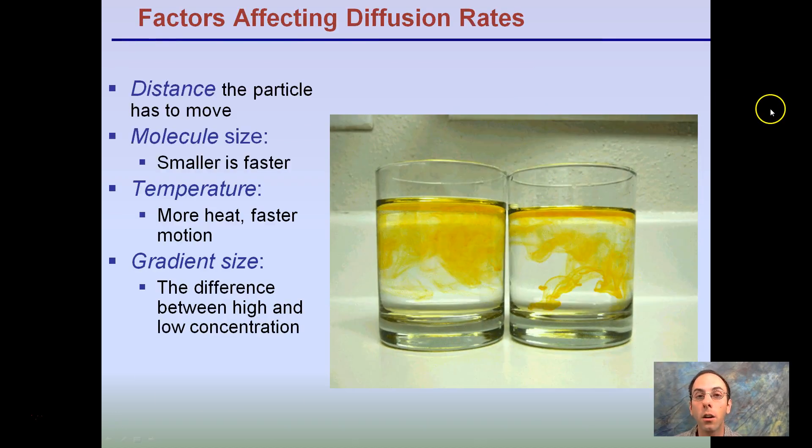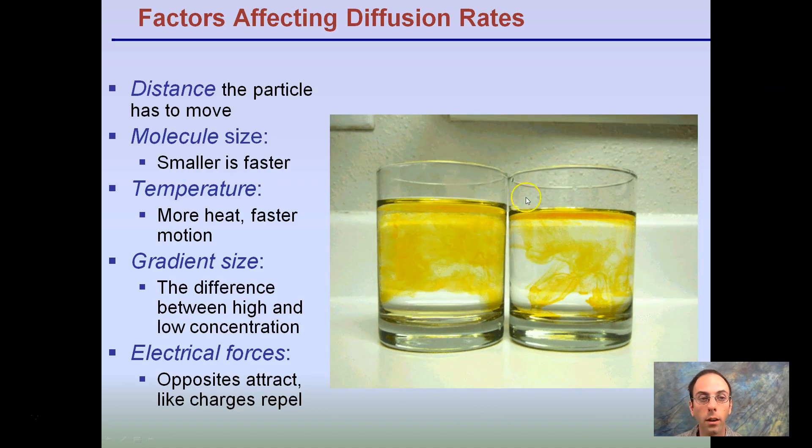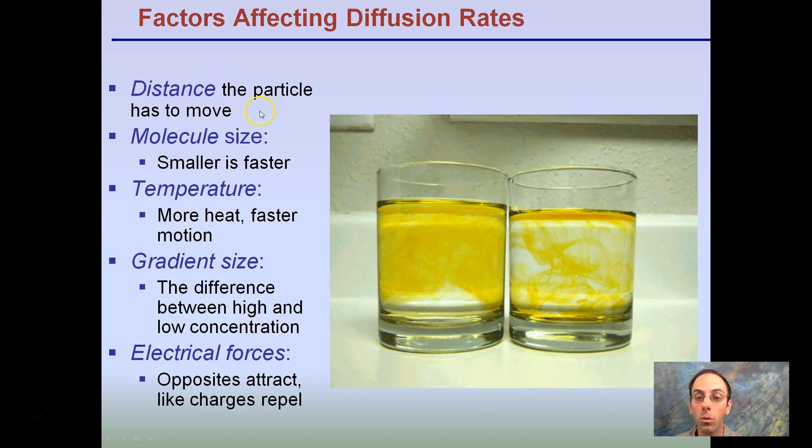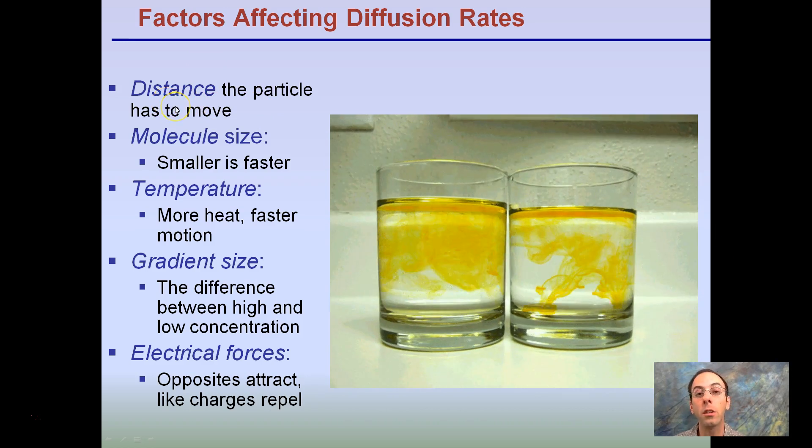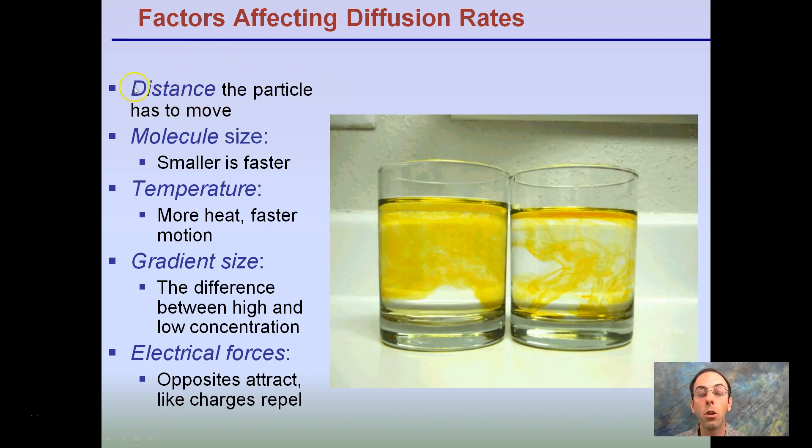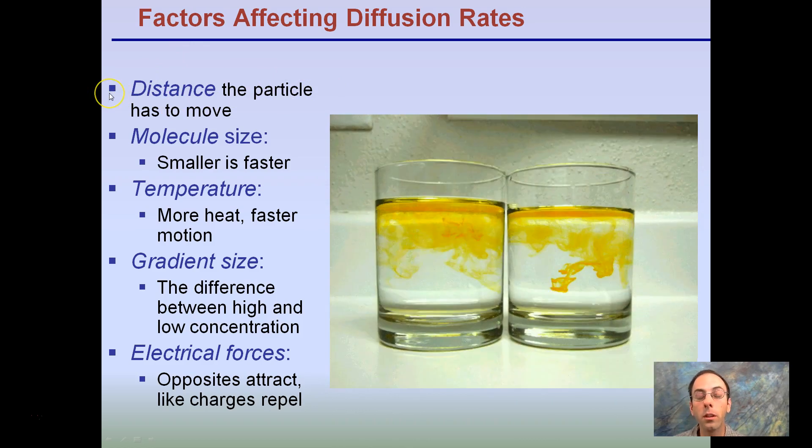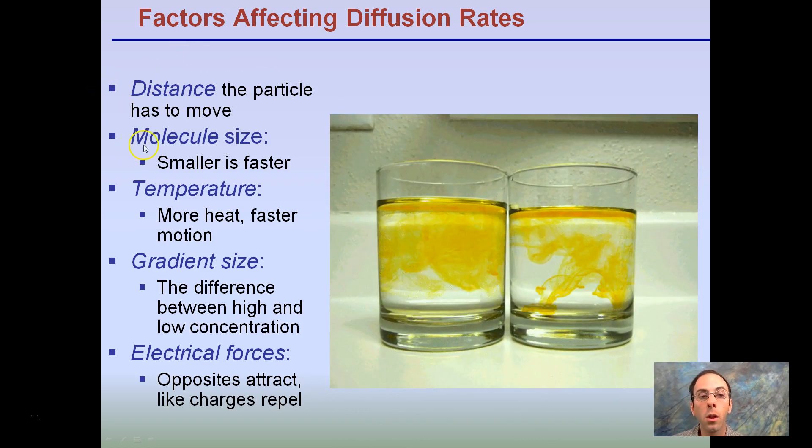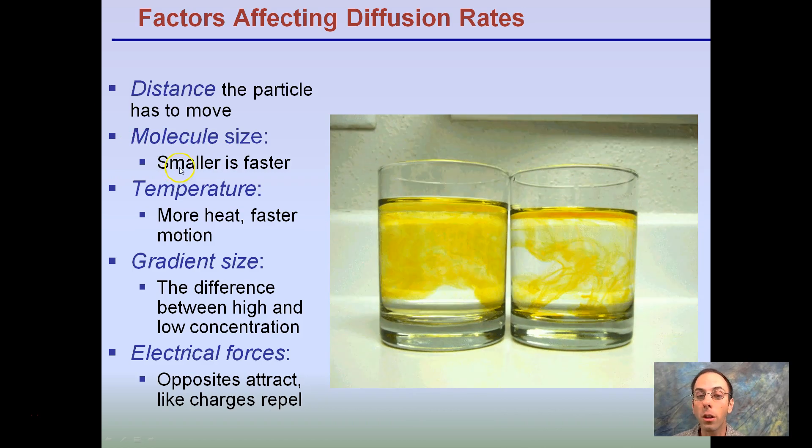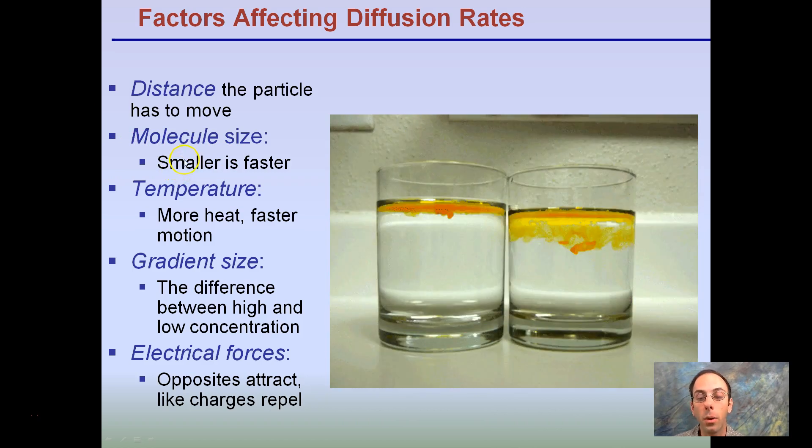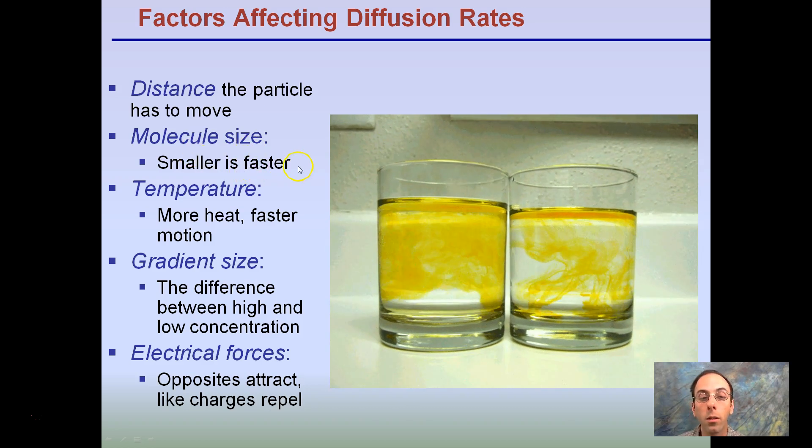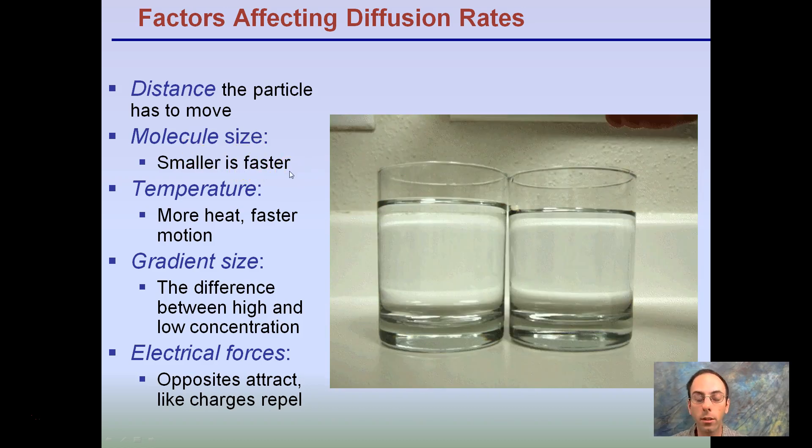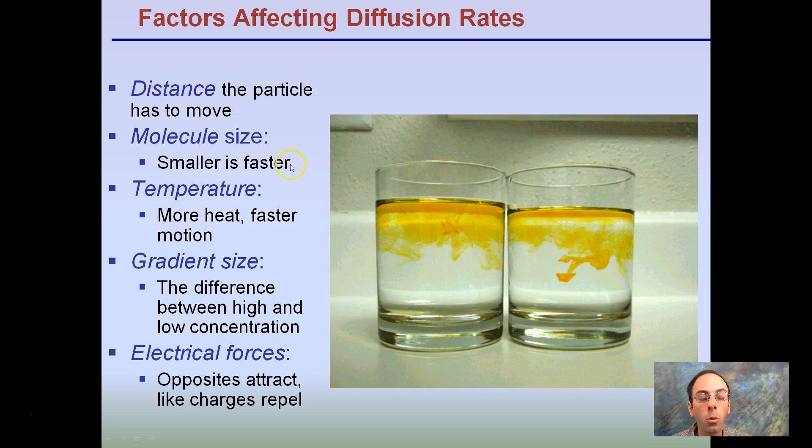Factors affecting our diffusion rates, you can see here. Distance the particle has to move. Going back to our example of the perfume, if it's a very large room, it's going to take a longer time for those further away in the room to be able to smell the perfume. Molecule size: the small molecules will move faster. Big molecules take a lot of energy to move, and they can be a lot slower. Small molecules move a lot faster and diffuse a lot quicker.